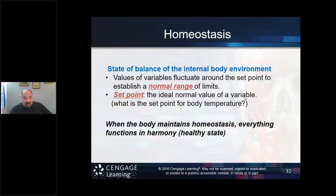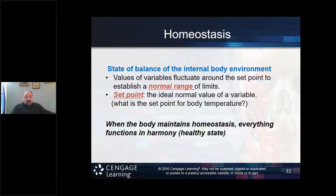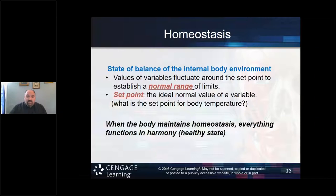We talked about these variables last class: temperature, blood pressure, heart rate, respiratory rate, your breathing rate, different chemical levels such as sodium ion concentration, potassium ion concentration, and calcium ion concentration — very crucial for the nervous system and the muscular system to do their functions. Homeostasis is the state of balance of the internal body environment.